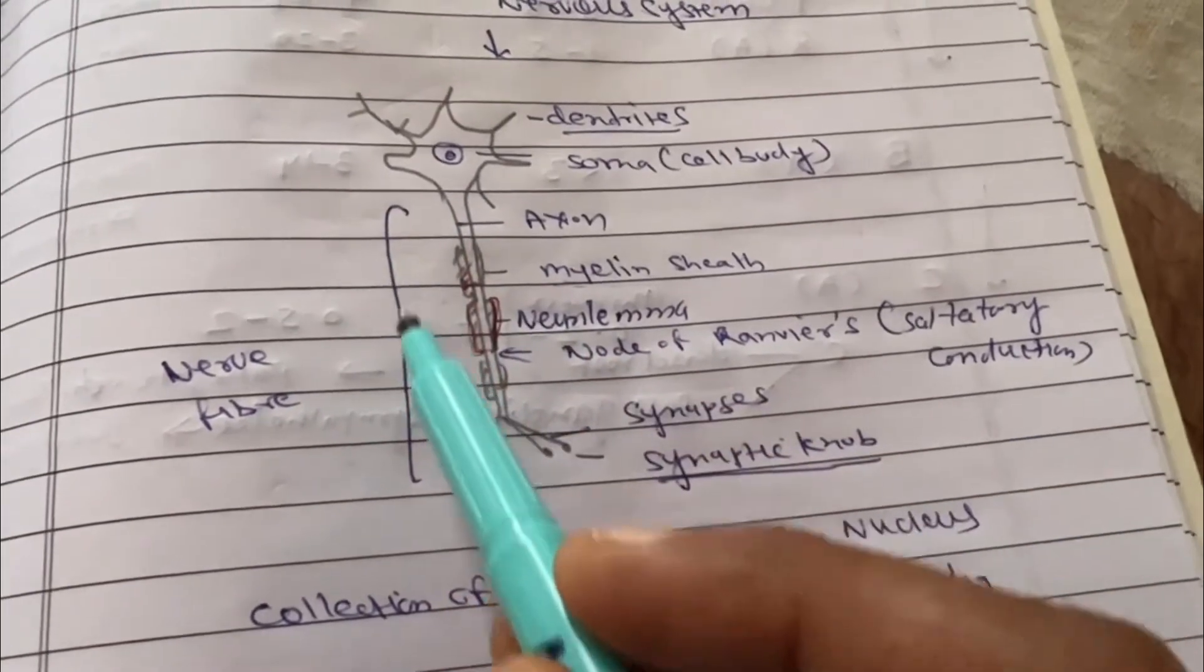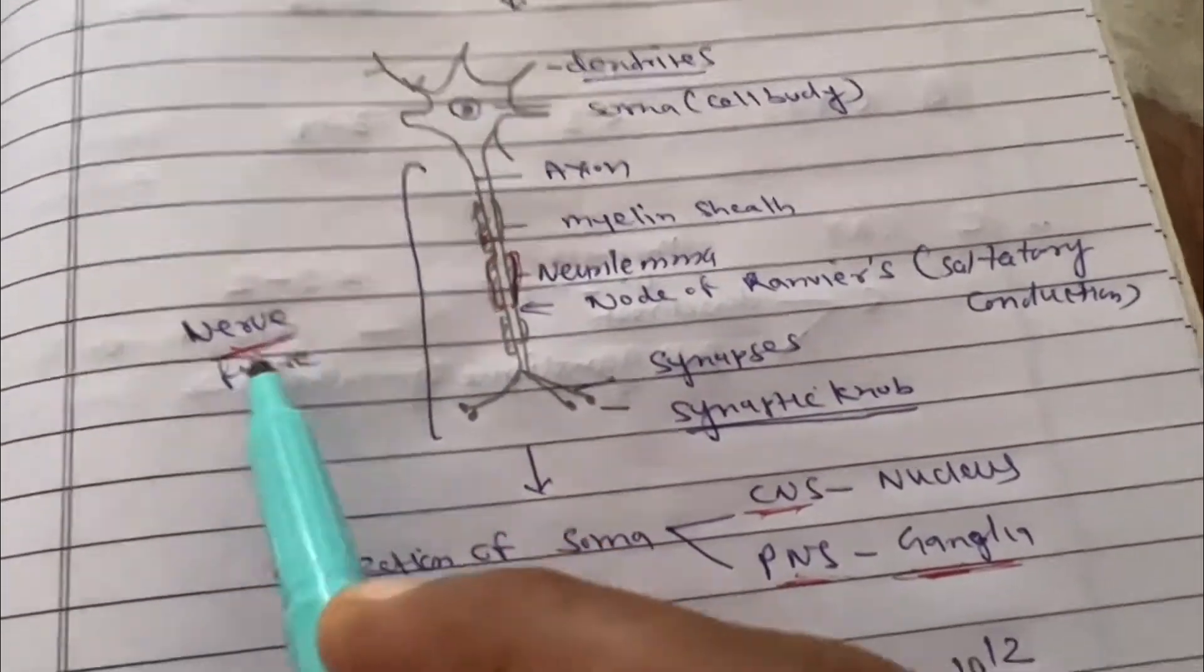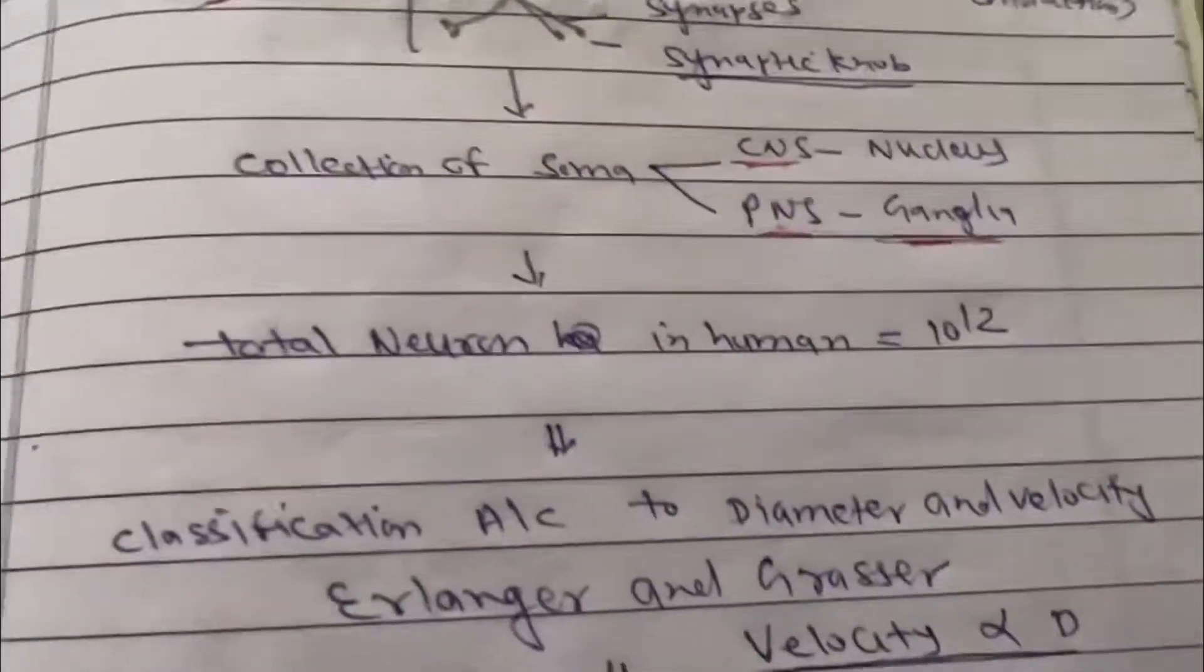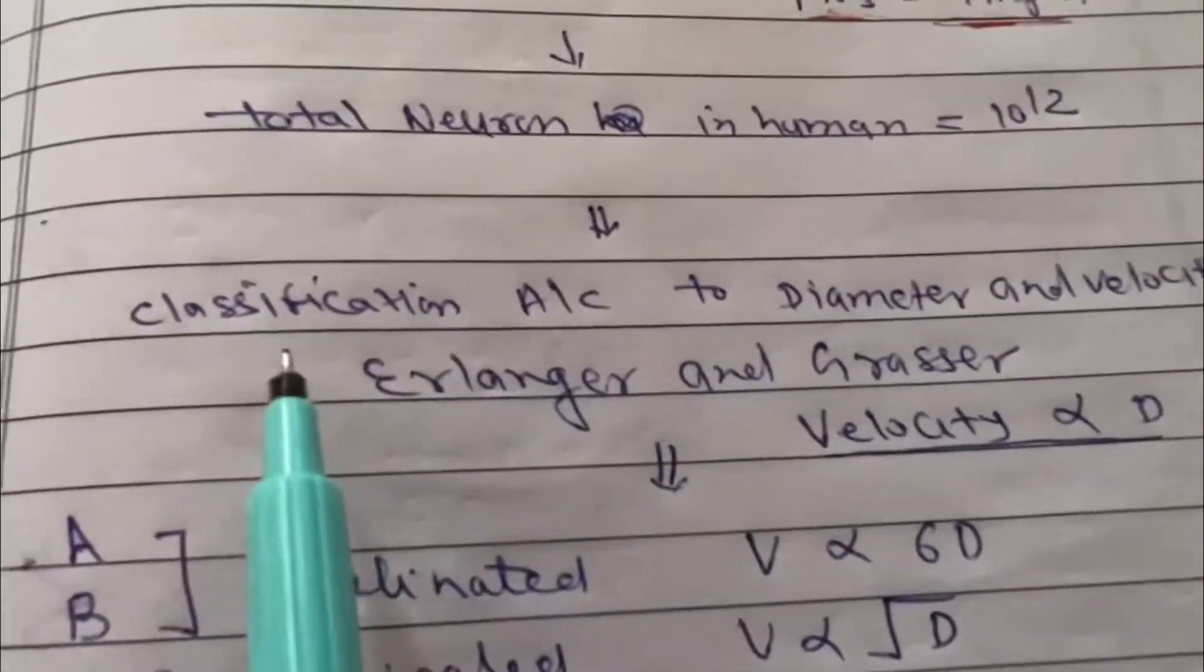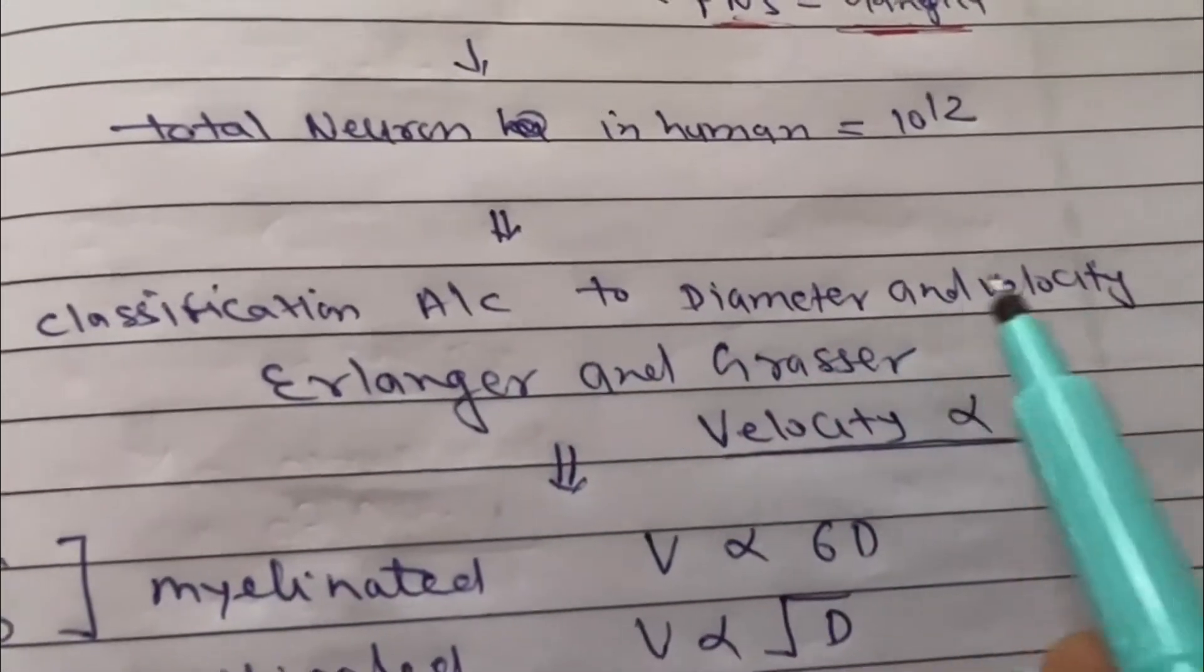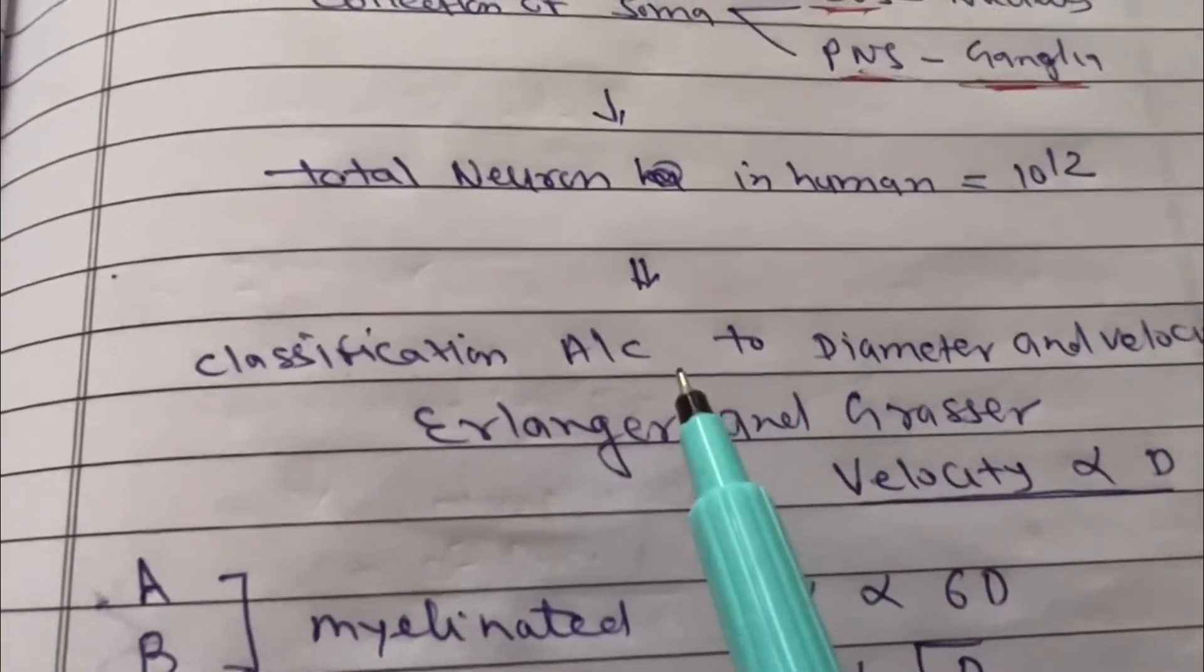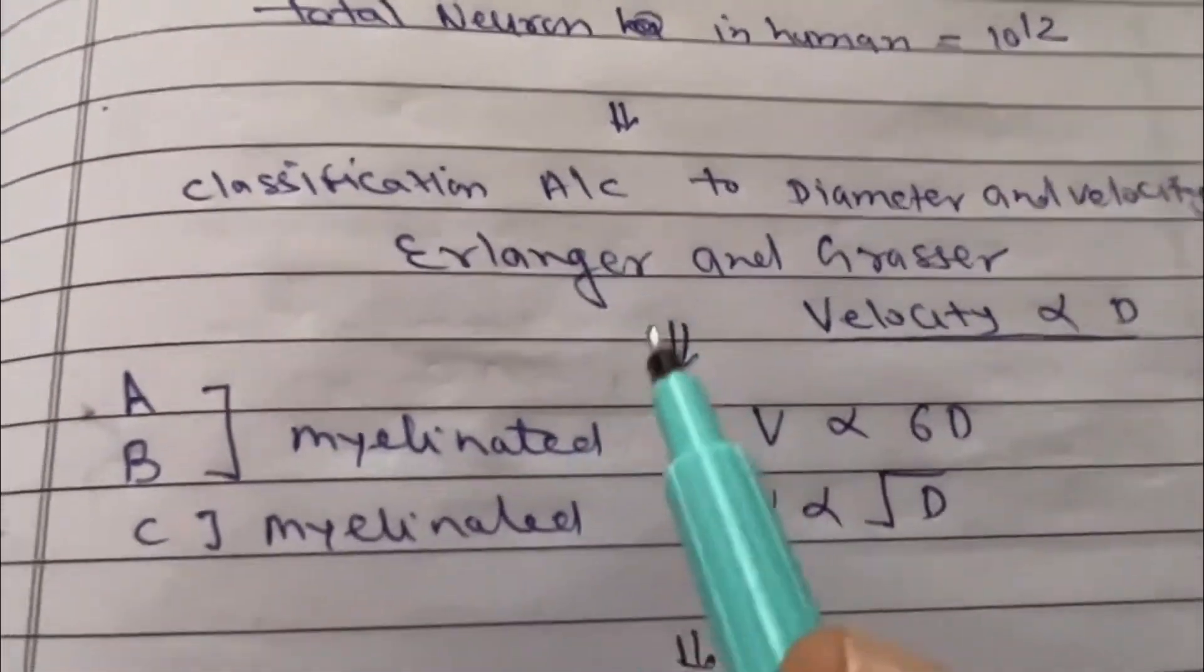Now this axon, myelinated or unmyelinated, is called nerve fiber. So this is nerve fibers. Now total neurons in humans are about 10 to 12. Classification according to diameter and velocity of this nerve fiber is very, very helpful in anastomosis of nerve fibers.